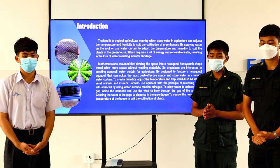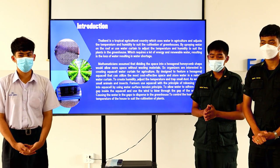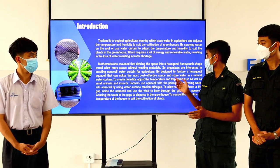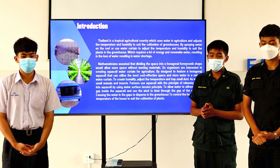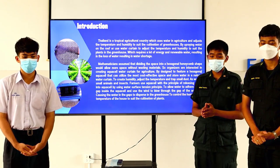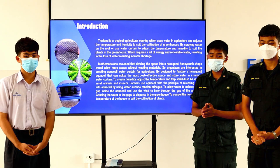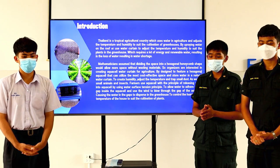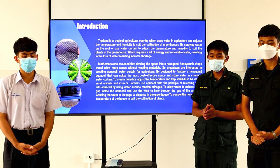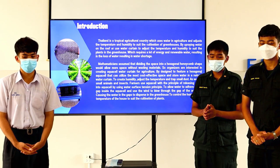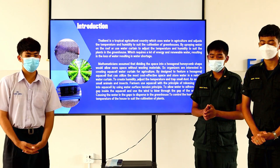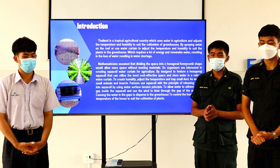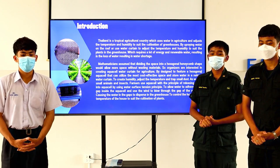Mathematicians assume that dividing the space into a hexagonal honeycomb shape would allow more space without wasting material, so organizers are interested in creating a partial water curtain for agriculture.